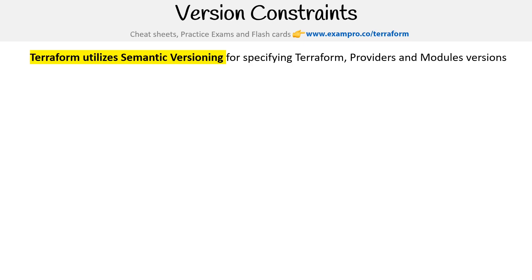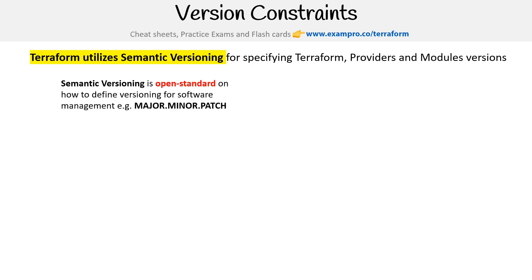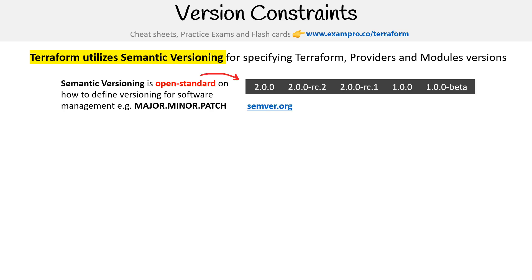We're looking at version constraints. Terraform utilizes semantic versioning for specifying Terraform providers and module versions. Semantic versioning is an open standard on how to define versioning for software management — you have your major, minor, and your patch.